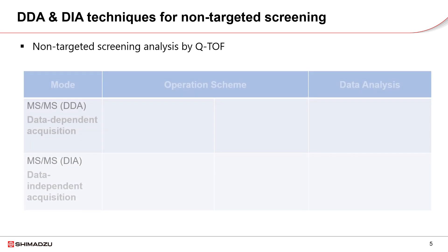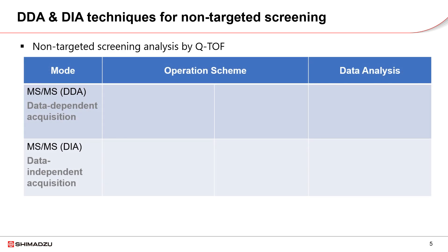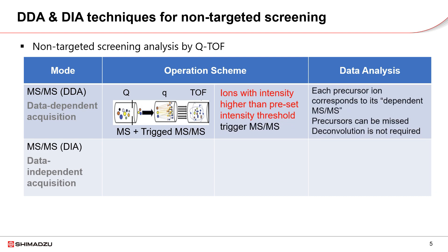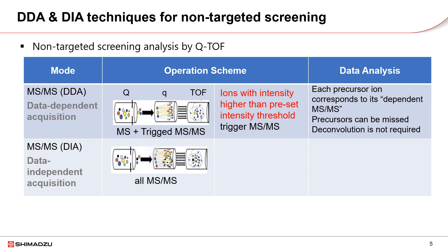There are two types of data acquisition techniques: DDA, data-dependent acquisition and DIA, data-independent acquisition. Both methods are applied to carry out non-targeted screening, each with advantages and disadvantages.